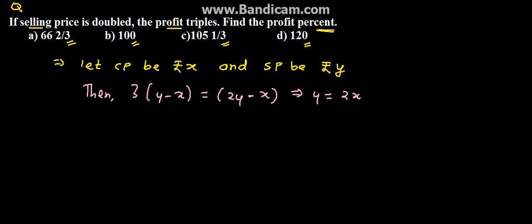Now we can say that profit will be equal to rupees (y minus x) equals rupees (2x minus x), that is equal to x.